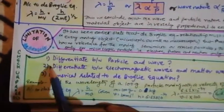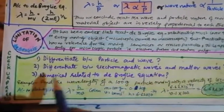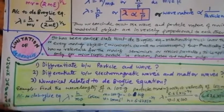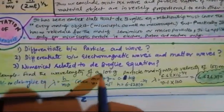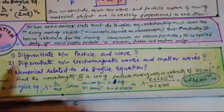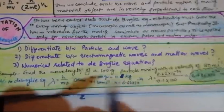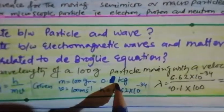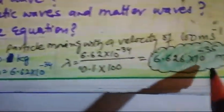It's time to check your progress. In the PDF I am going to share, you need to: differentiate between particle and wave, differentiate between electromagnetic waves and matter waves, and solve some numericals. For a numerical example: find the wavelength of a 100-gram particle moving with a velocity of 100 meters per second. Using lambda = h/mv, where m = 0.1 kg, v = 100 m/s, and h = 6.62 × 10⁻³⁴, the answer comes to 6.6 × 10⁻³⁴. The steps are: write the formula, note what is given, and substitute into the formula.